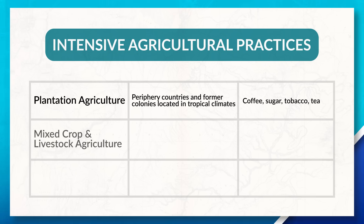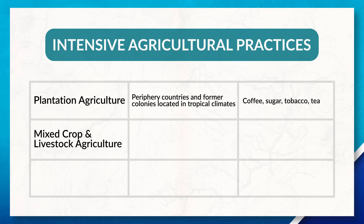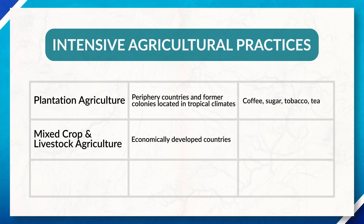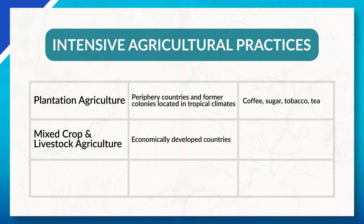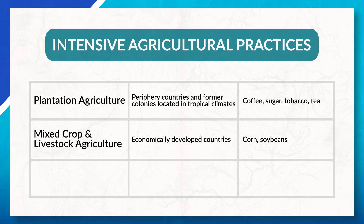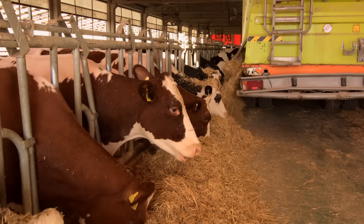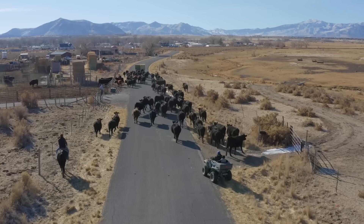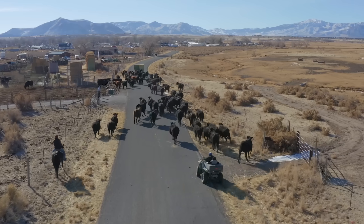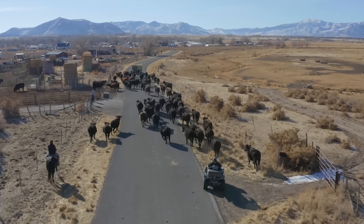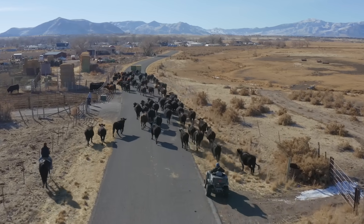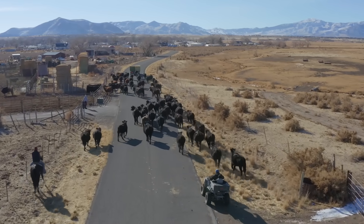The next intensive practice is mixed crop and livestock agriculture, which is typically found in more economically developed countries. Here, farmers grow crops such as corn and soybeans, which are often used to feed and fatten the livestock. Once the livestock is ready for sale, it'll be sent to the slaughterhouse, processed, and eventually sent to the market for sale.